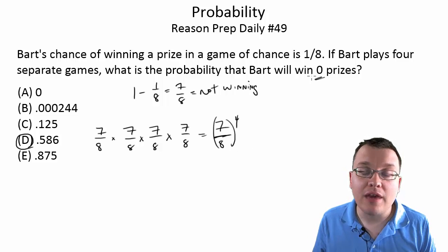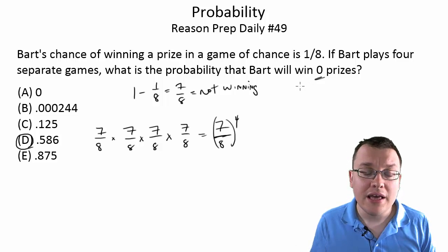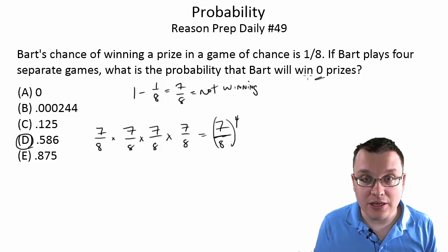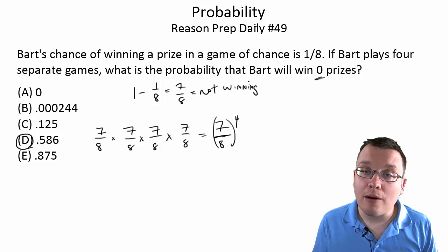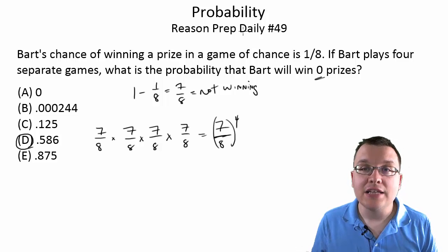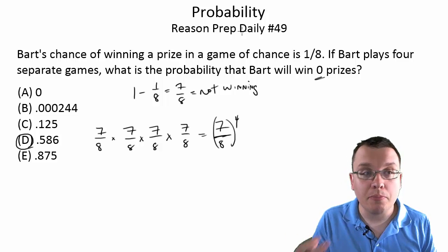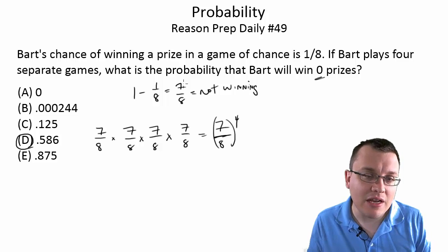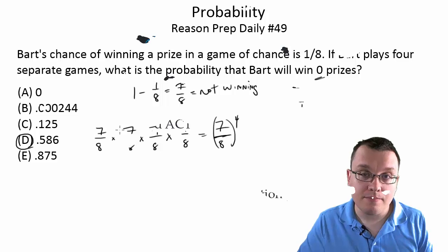If you had to calculate something like what is the probability that Bart will win one prize or two prizes, then it would require binomial probability. I just don't think you're going to see it on the SAT math 2. So when you see a probability question, keep it simple. It's going to be a relatively simple calculation. You just might have to do a little trick, like in this case, figure out that the probability of not winning is seven eighths. But regardless, it's going to be pretty straightforward — don't overcomplicate it.